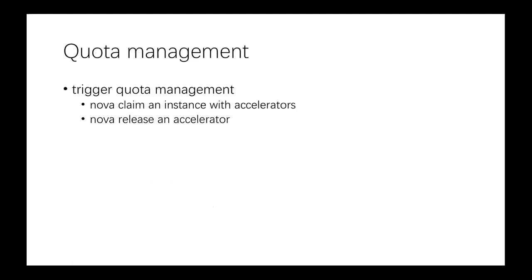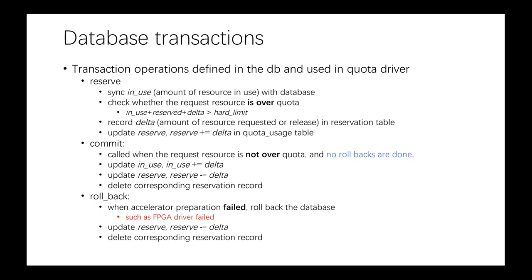For the quota management in our project, there are two kinds of scenarios which quota management is triggered. First, when we claim an instance with accelerators via Nova, or when we release an accelerator — at that time we update the quota usage table in the database and then trigger quota management.